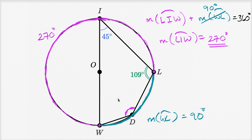So the measure of this arc in purple is 270 degrees, and now we can figure out the measure of angle D. It's an inscribed angle that intercepts that arc, so it's going to have half the measure. Half of 270 is 135 degrees. And we're done.